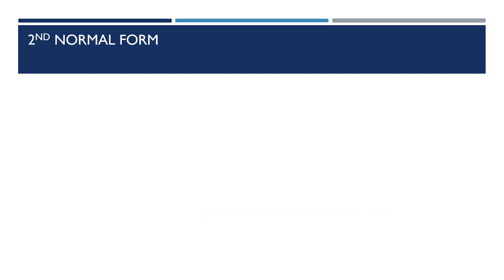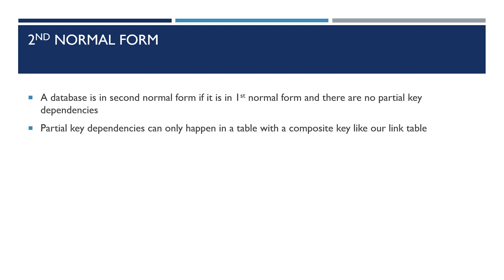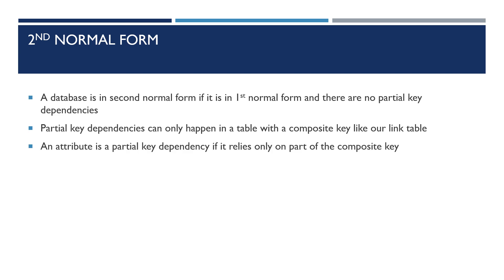A database is in second normal form if it is already in first normal form and there are no partial key dependencies. Partial key dependencies can only happen in a table with a composite key, like our link table. An attribute is a partial key dependency if it relies on only one part of the composite key, not both parts.